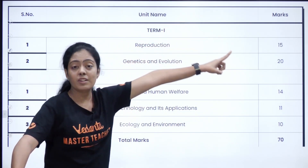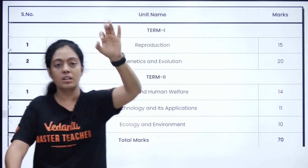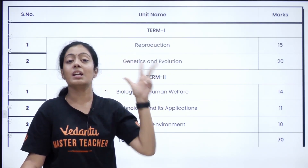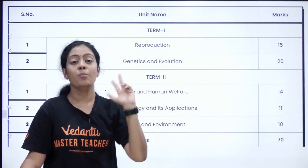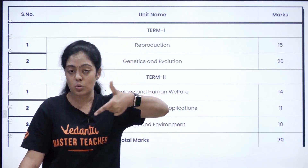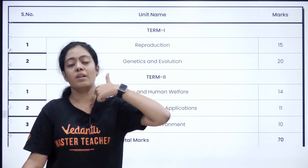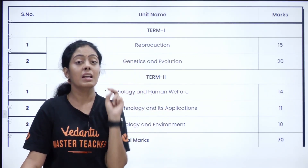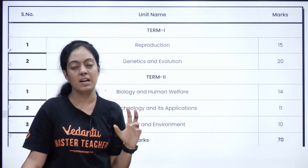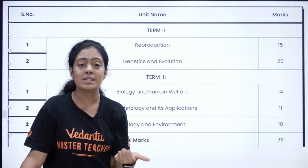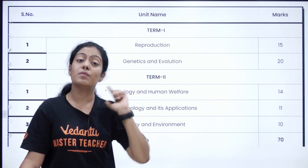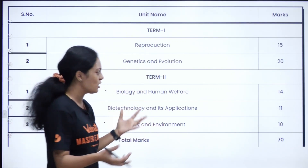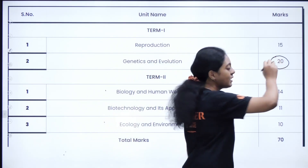From the Reproduction unit, there are 15 marks and 3 chapters: Sexual Reproduction in Flowering Plants, Human Reproduction, and Reproductive Health. The first two chapters — Sexual Reproduction in Flowering Plants and Human Reproduction — are very very important. Reproductive Health is more for short answers, while long answers and case-based studies can be asked from the first two chapters.